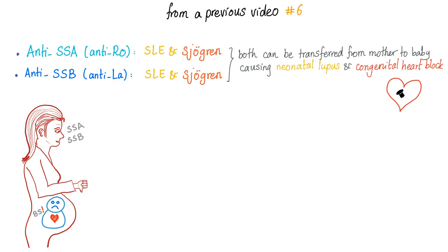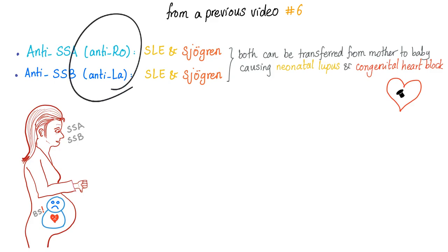Let's talk about Sjögren's. Anti-SSA and anti-SSB — SS stands for Sjögren's syndrome. Both of them are associated with lupus and Sjögren's. They are not sensitive or specific, but they are associated with neonatal lupus and congenital heart block. And if you have either of them with Sjögren's syndrome, you have an increased risk of non-Hodgkin's lymphoma. Please don't forget that.